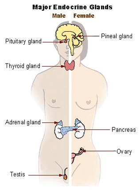Key feedback loops include: TRH, TSH, T3, T4; GnRH, LH, FSH, sex hormones; CRH, ACTH, cortisol; renin, angiotensin, aldosterone; and leptin versus insulin.